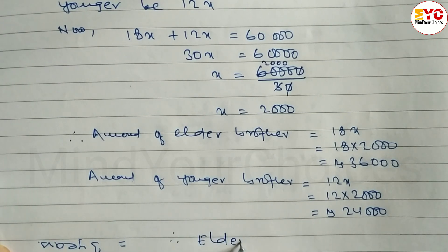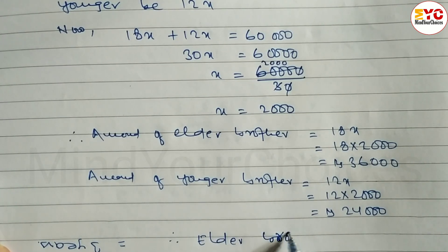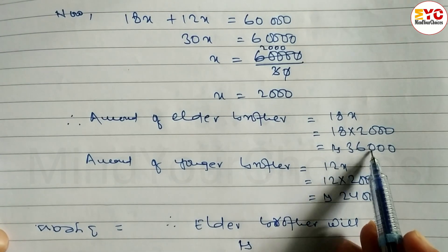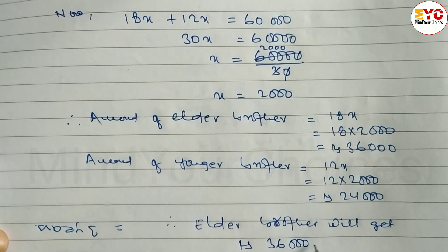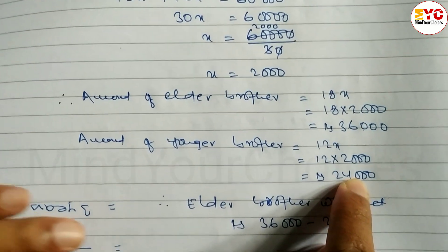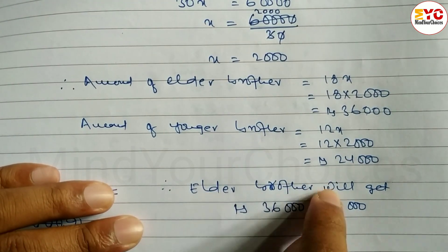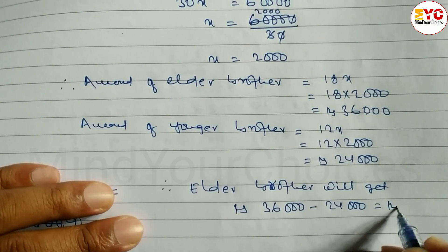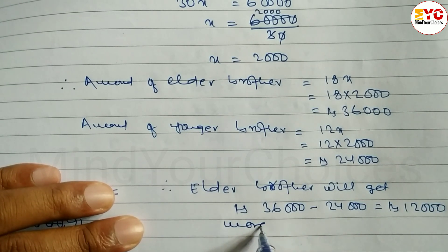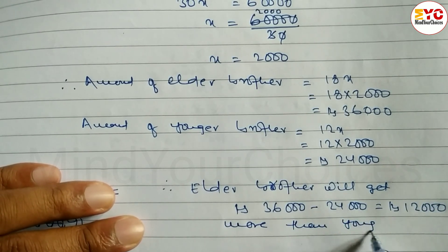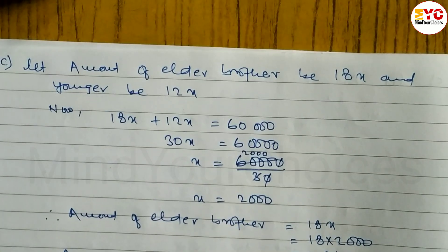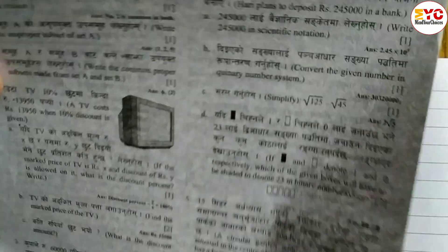Therefore, the elder brother will get 36,000 minus 24,000, which equals Rs. 12,000 more than the younger brother. Hope you understand. That was question number 3 from Set 8.